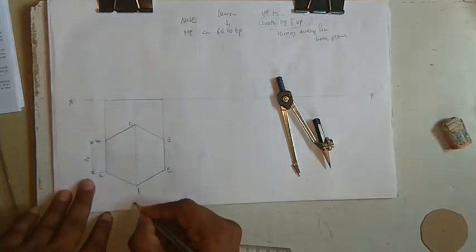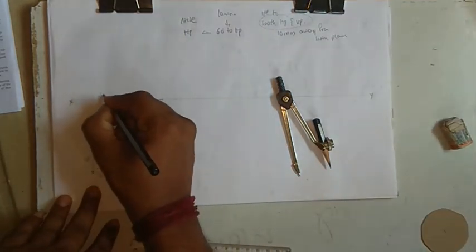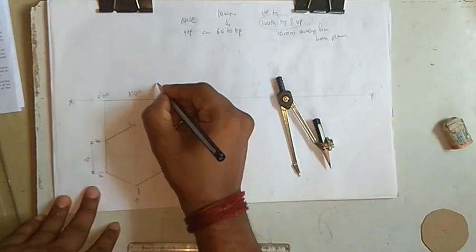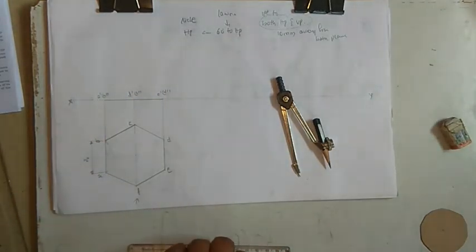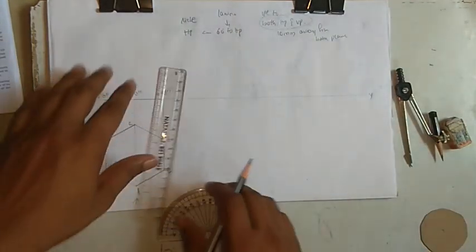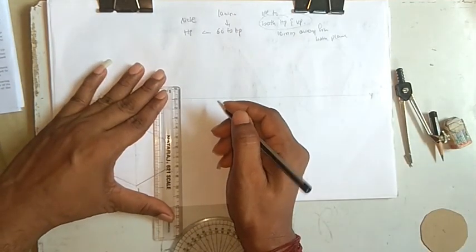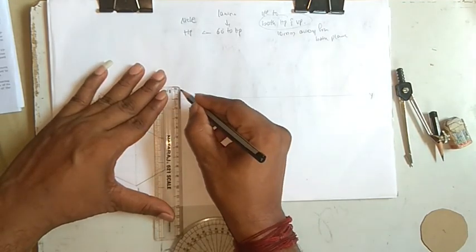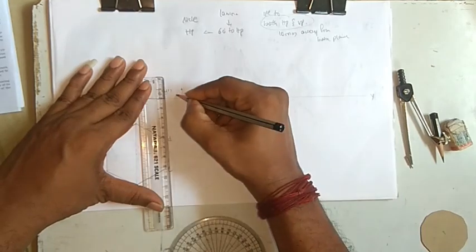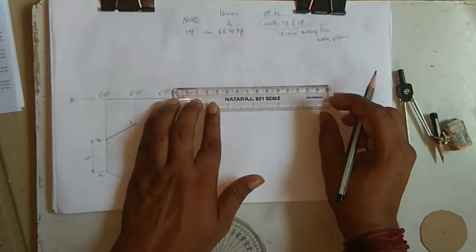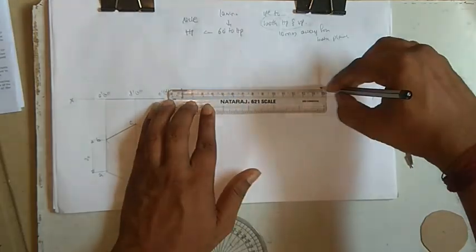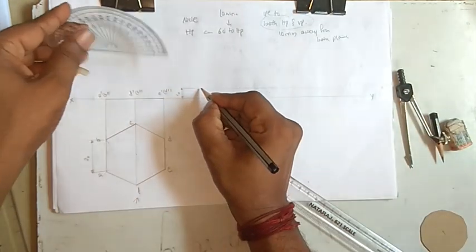From here we have A', B', F', C', E', D'. Now it's inclined at 60 degrees, but before that we need to take 10 millimeters. This is 10 millimeters - just drop one line. On this line you need to take A' in bracket B'.